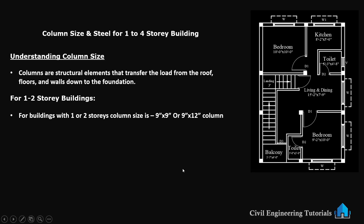So for buildings with 1 or 2 storeys, the column size is 9 inch by 9 inch or 9 inch by 12 inch. This is suitable for a small 2 storey house.